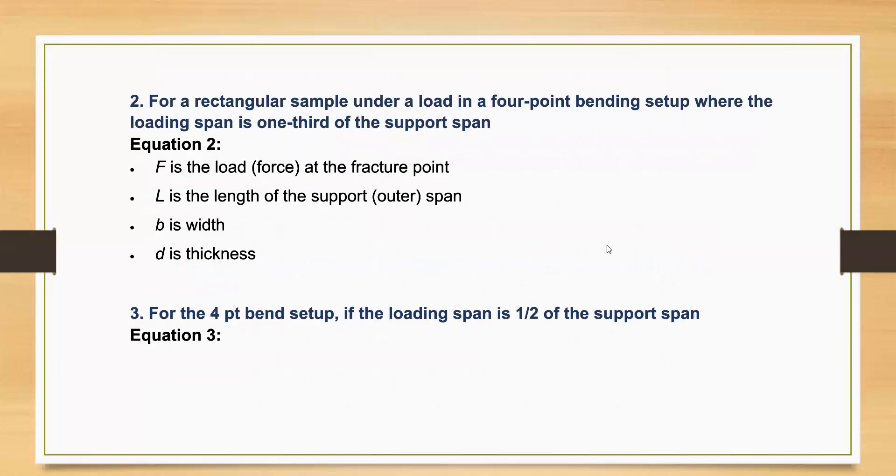For a rectangular sample under a load in a four-point bending setup where the loading span is one-third of the support span, Equation 2 follows as: F is the load or force at the fracture point, L is the length of the support or outer span, b is the width, and d is the thickness.